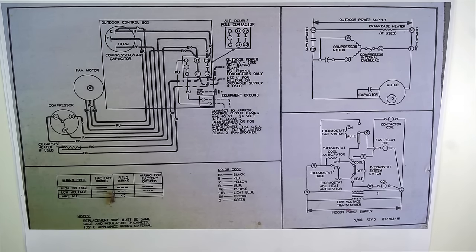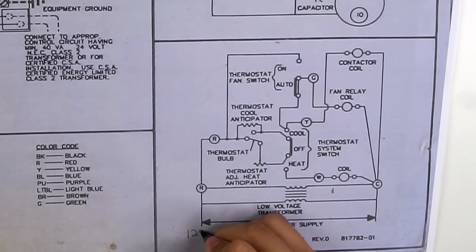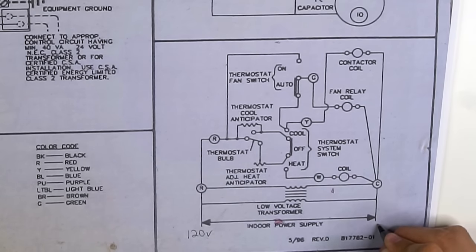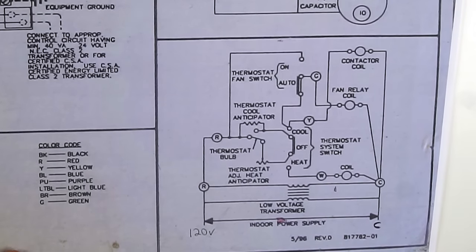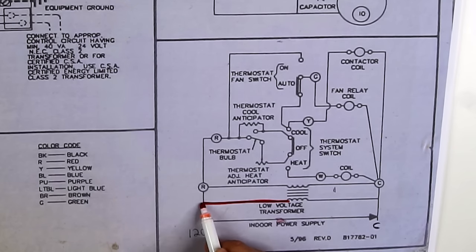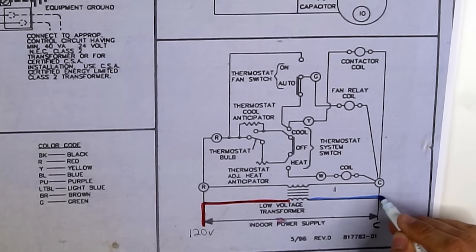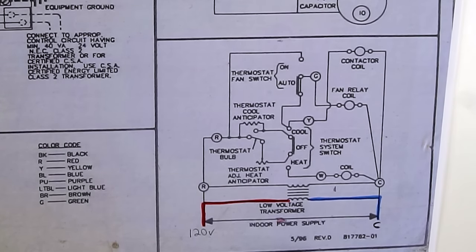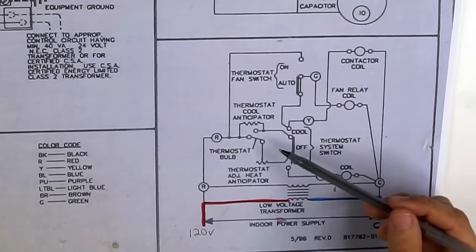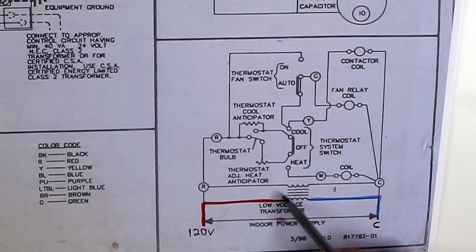Right here it says we have the indoor power supply — this is in the furnace or air handler, and in most cases it's going to be 120 volts. You'll have 120 volts hot coming in on one side and your common on the other side. The transformer symbol — three lines with windings on either side — is a step-down transformer. It gets 120 volts and steps it down to 24 volts. So the furnace gets 120 volts, the power reaches the transformer, and the transformer steps it down to 24 volts.